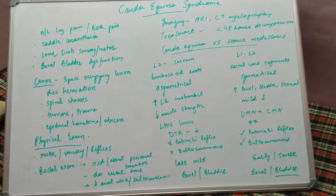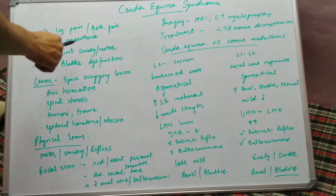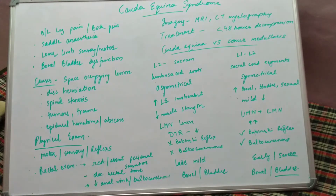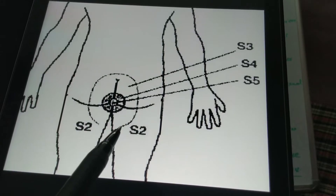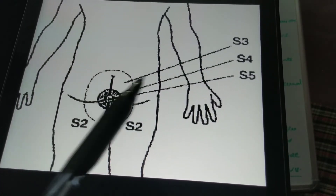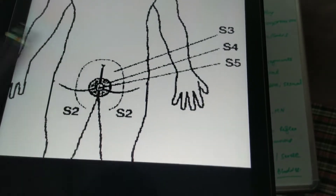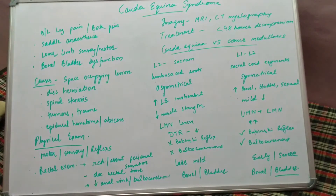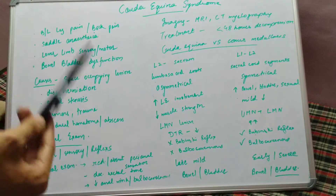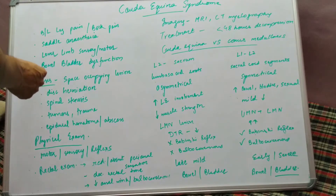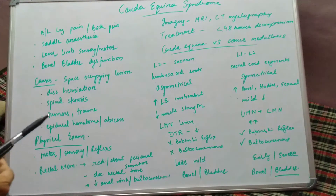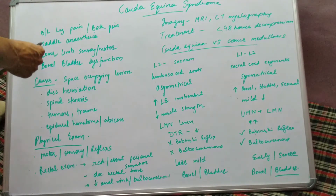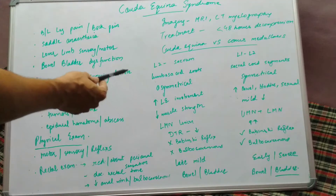Cauda equina syndrome is basically compression of the cauda equina. It presents as bilateral leg pain or back pain — more predominantly back pain. Another important finding is saddle anesthesia — the perianal region — as there is involvement of the sacral nerve roots. The central region involves S5, S4, S3, and S2. As there is compression of the nerve roots, there will be lower limb sensory and motor changes. With involvement of the sacral nerve roots, there will also be bladder and bowel dysfunction. These four features — back pain or bilateral leg pain, saddle anesthesia, lower limb sensory and motor changes, and bladder and bowel dysfunction — are seen in cauda equina syndrome.